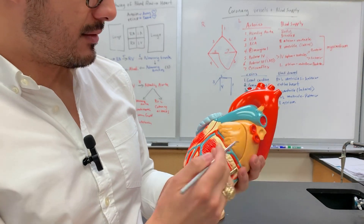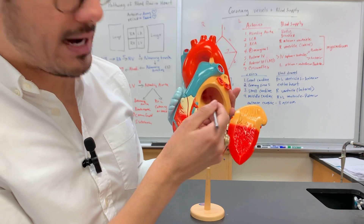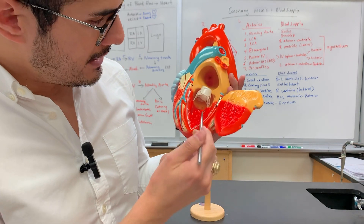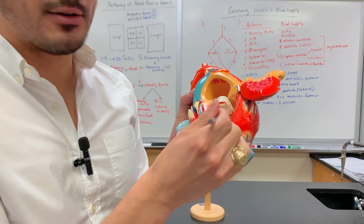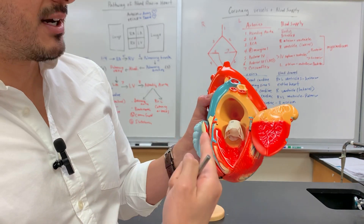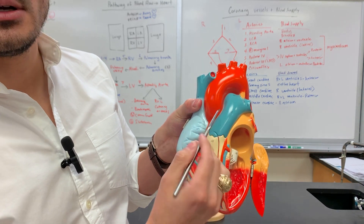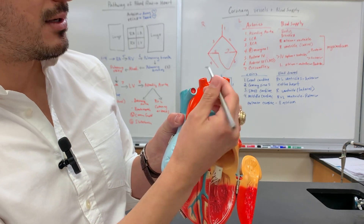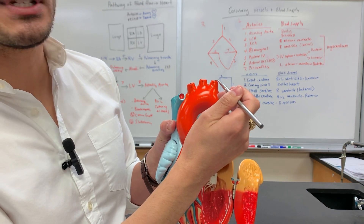We've gone over some of the venous system. Once the blood gets dumped back into the heart, you have the left atrium, then the mitral or bicuspid valve, then the ventricle, and then the aortic semilunar valve. The oxygenated blood goes up through the ascending aorta, then the aortic arch. The branches are the brachiocephalic trunk, the left common carotid, and the left subclavian.